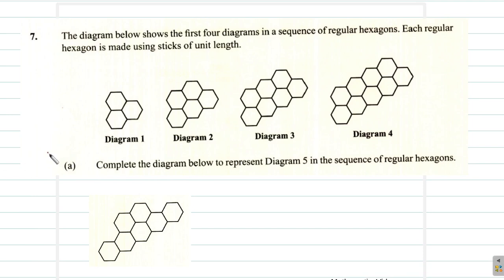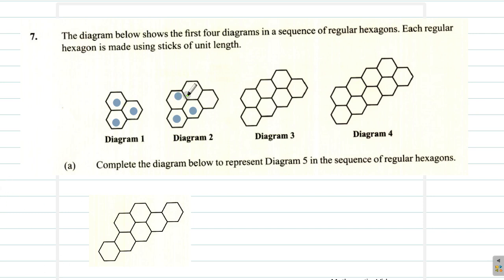Now if you look at this, you see that in diagram 1 you have a hexagon here, one directly at the top, and one to the right. In diagram 2, you have the original ones, but you have these two new ones added. These were the original ones, and then one to the right.